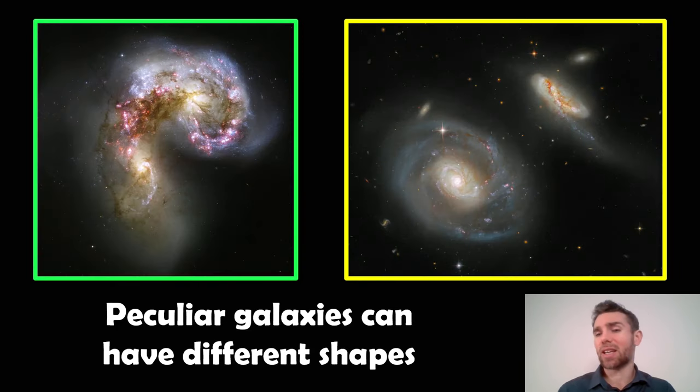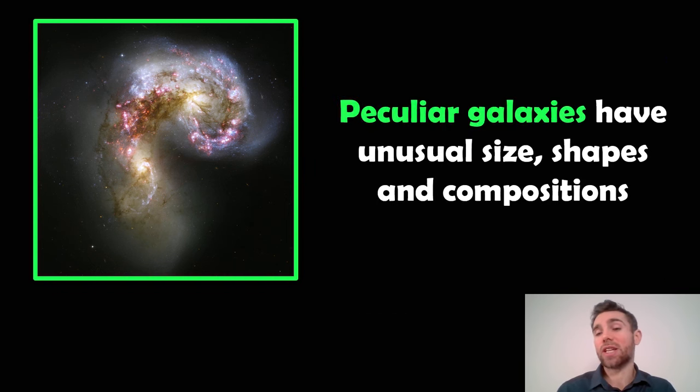Now peculiar galaxies can have any sort of shape really and it's very difficult to give them classification. So you could just say oh this one's like an L shape or a C shape, there could be anything really, so it becomes very difficult to give them a classification to fit nicely onto that diagram there because it can be a range of shapes, sizes, compositions really which is not quite the same as your spirals and your ellipticals.